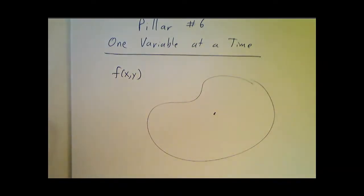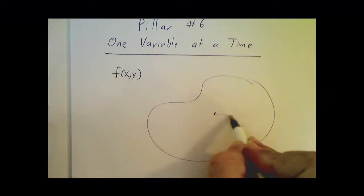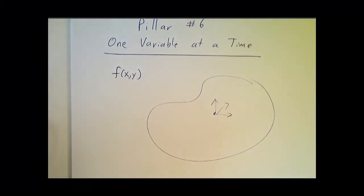Well, a derivative is supposed to be the rate of change. But the rate of change in what direction? Side to side? Up and down? Diagonal? There are lots and lots of different directions.